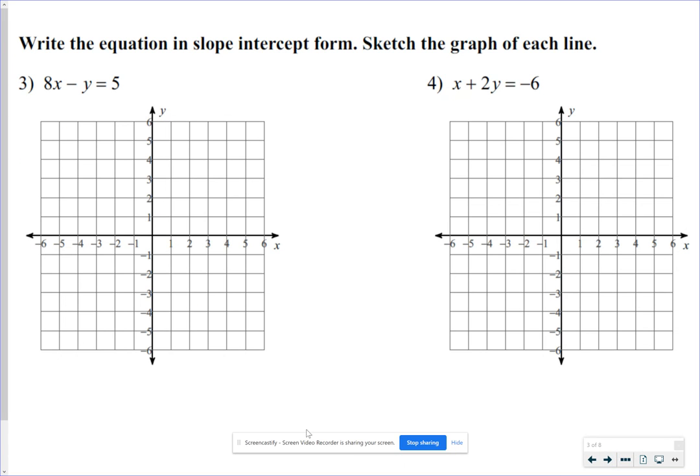Okay, moving on. Write the equation in slope-intercept form. Sketch the graph of each line. Notice this is standard form. 8x minus y equals 5. That's what we call the standard form equation of a line. We're supposed to switch it over to slope-intercept. Remember, slope-intercept is y equals mx plus b.